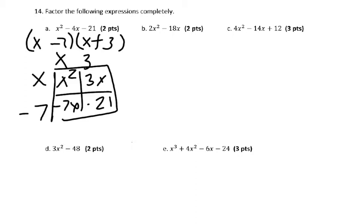And letter b, you can factor out a 2 and an x. 2 goes into 2 and 18. x goes into 2x squared and 18x. So when you factor those out, you're left with x minus 9 inside. Make sure whatever you factor out in the beginning, it has to come down with everything else.